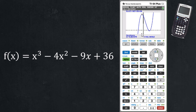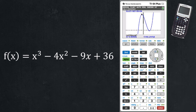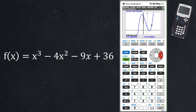Now I'll repeat the process for the minimum. Press Second, Trace, and this time select Minimum and press Enter. Go to the left of the minimum, press Enter. Go to the right of the minimum, press Enter. For Guess, just press Enter. I now have the minimum with its decimal value. Pay attention to any rounding requests.